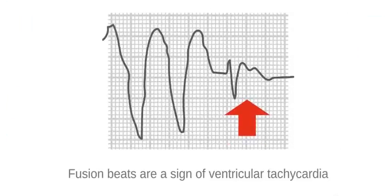Figure 9 demonstrates fusion beats, a sign of ventricular tachycardia. These are produced when both a supraventricular and ventricular impulse combine to produce a hybrid appearing QRS.